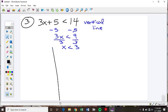So we make a vertical line through 3, but it needs to be a dashed line because it was just less than. So we just make a dashed line.